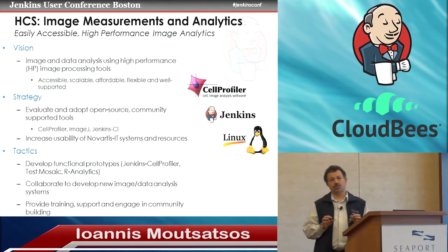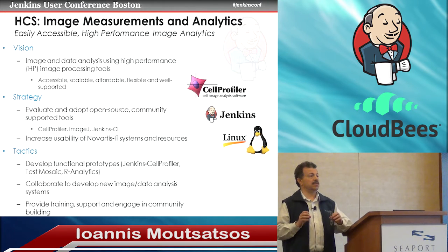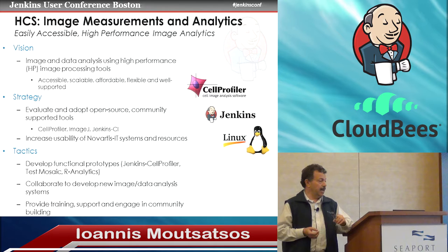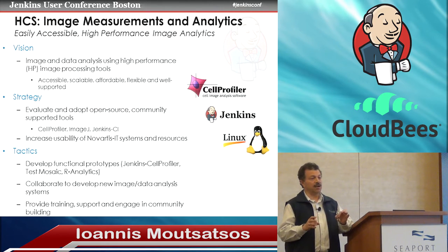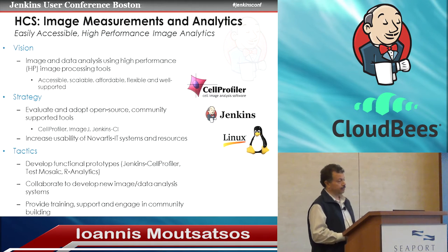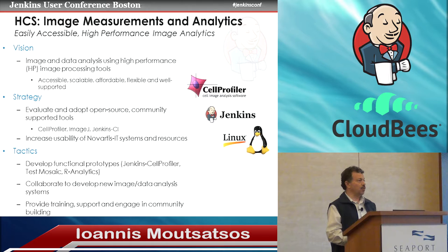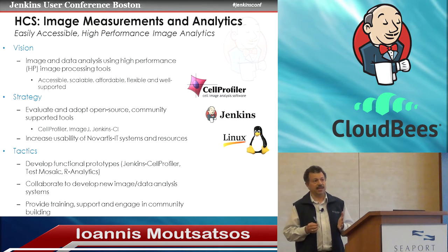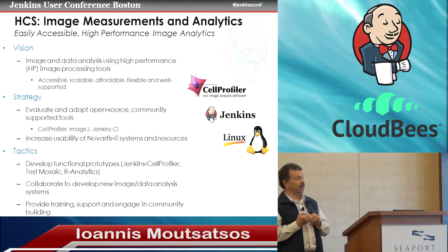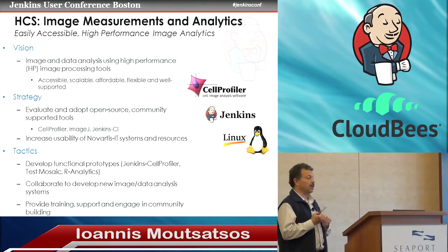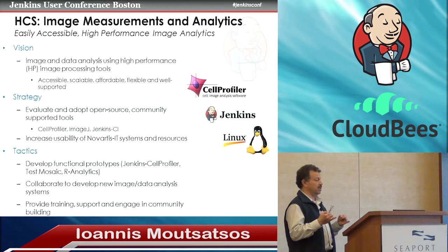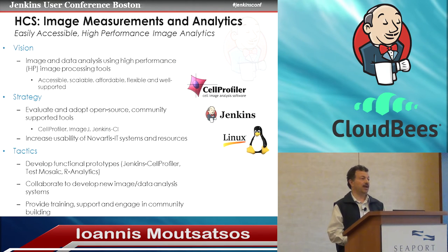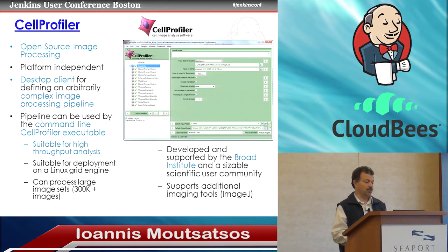The vision was to use the high-performance compute cluster that Novartis has available, supplemented with a number of open source tools in an environment that the life scientists themselves, without a lot of technical knowledge, could use. What we came down to was using three basic tools: CellProfiler, which is an open source image processing software; Jenkins, which ties all these tools and processes together; and Linux for parallelizing the image processing jobs.